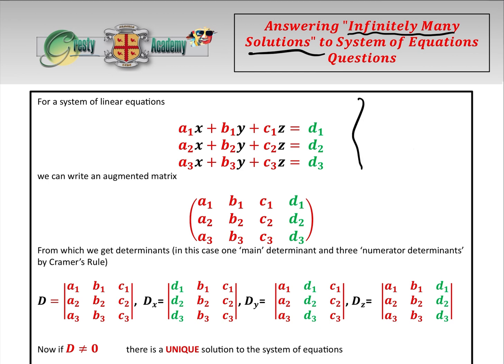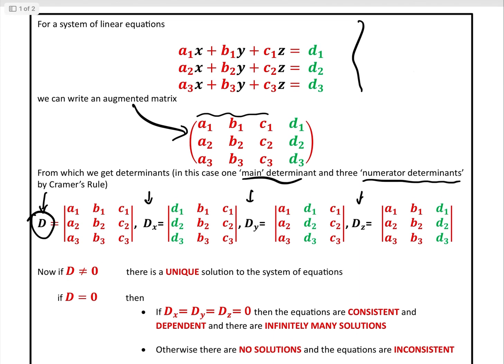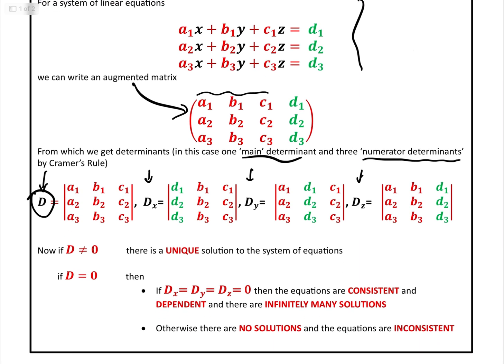What we're talking about: we have a system of equations, a1x + b1y + c1z = d1, and so on for a2, a3. We can write that as an augmented matrix with columns a1a2a3, b1b2b3, c1c2c3, and d1d2d3. From that we can get determinants — one main determinant D, which is the standard one, and then three numerator determinants from Cramer's rule: Dx, Dy, and Dz. The main determinant D (the a1b1c1 determinant) dictates whether or not there is a unique solution.